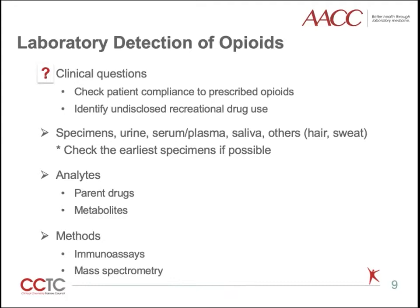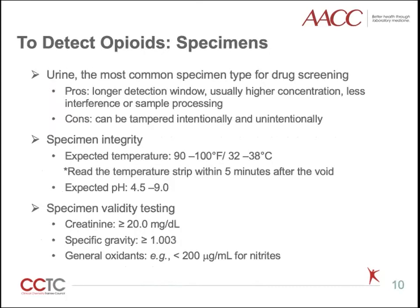Common specimens include urine, serum, plasma, saliva, or others. Each specimen type has its advantages and limitations. The general rule is to examine the earliest specimen if possible. Urine is the most common specimen type for drug screening. Compared to blood, urine usually has a longer detection window, higher concentration for most drugs, less interference, and requires less sample processing. However, it can be tampered with intentionally or unintentionally. Therefore, it is important to check the integrity or validity of urine samples.